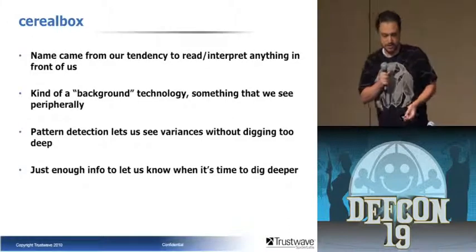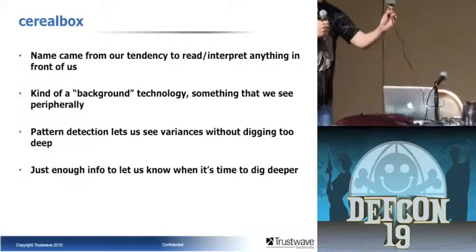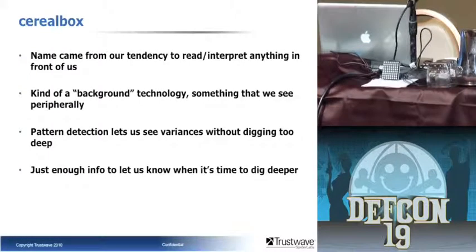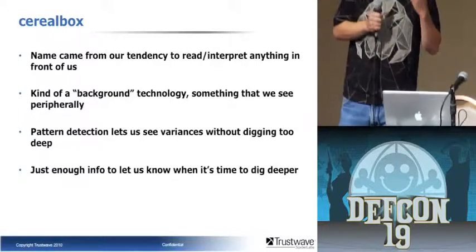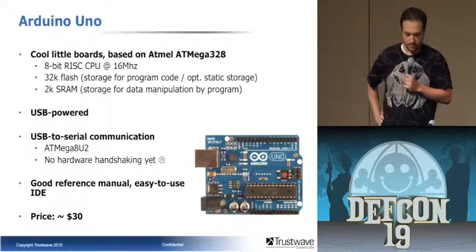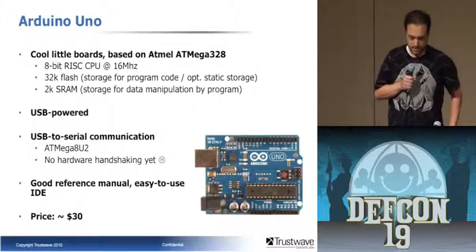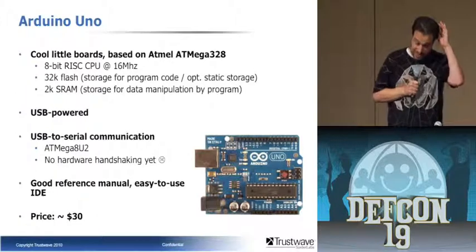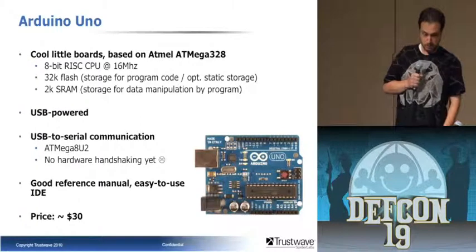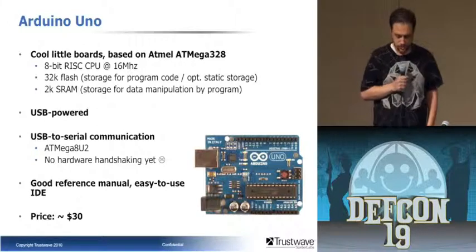Pattern detection — it lets us see variances without digging in. It's just enough information. I've got this tiny little bit of space to work with, which can't do all the things I'd want to do. But maybe that's good — maybe that's forced me to think: what do I really need to see? So it's based on the Arduino Uno, a little board based on the Atmel ATmega 328. It's an 8-bit RISC CPU at 16 MHz — pretty powerful. It's got 32K of flash, which is how big your compiled program can be, but only 2K of SRAM.